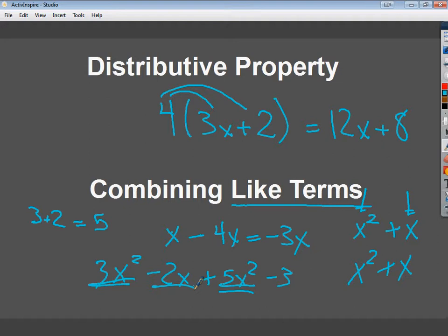So in order to combine them, I need to look at the sign in front of the numbers and not behind. So when I combine 3x squared and 5x squared, this minus in front of the 2x has nothing to do with anything. So I look at 3 plus 5 and I get 8x squared. Since there's no other x terms, I just bring down negative 2x and then minus 3.